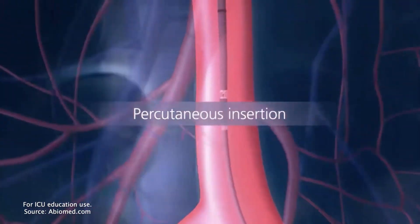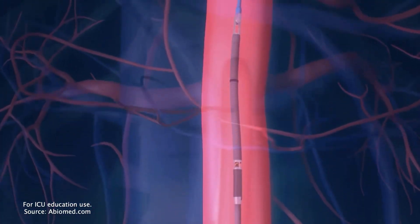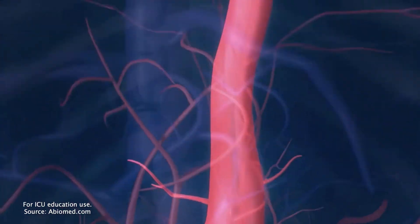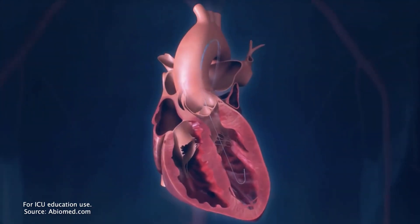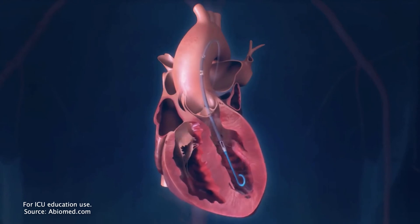The Impella system is placed percutaneously through the femoral artery using a monorail technique and a standard pigtail. It is advanced across the aortic valve and into the left ventricle.